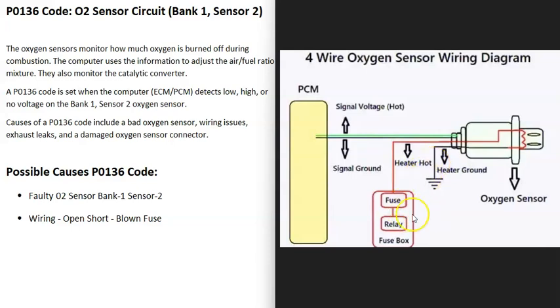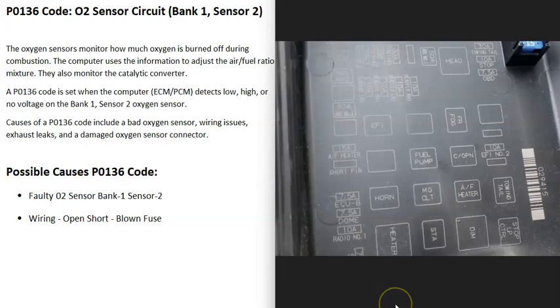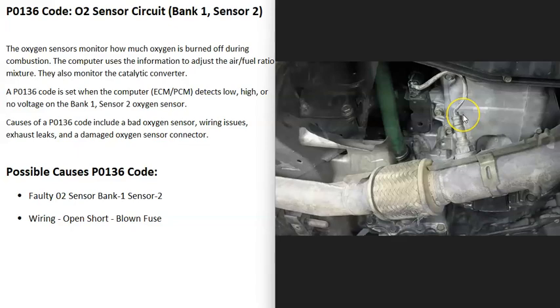There can also be a fuse or a relay. It's going to vary, so you'll need to research your particular vehicle. For example, right here this says AF heater—this is the fuse for that heater element built into the sensor. In this case, there's also a relay, AF heater, that's part of that O2 sensor heater element. Keep in mind these can be on a fuse and a relay.